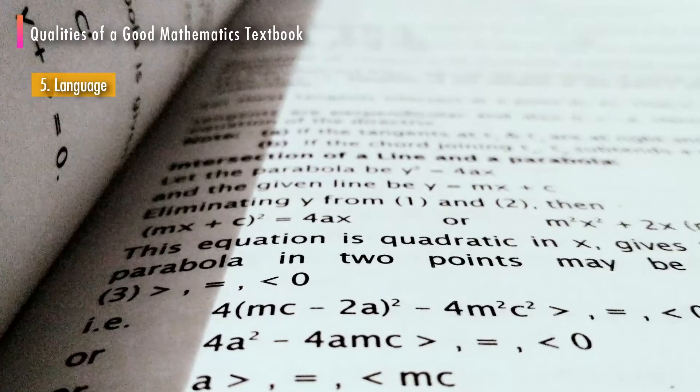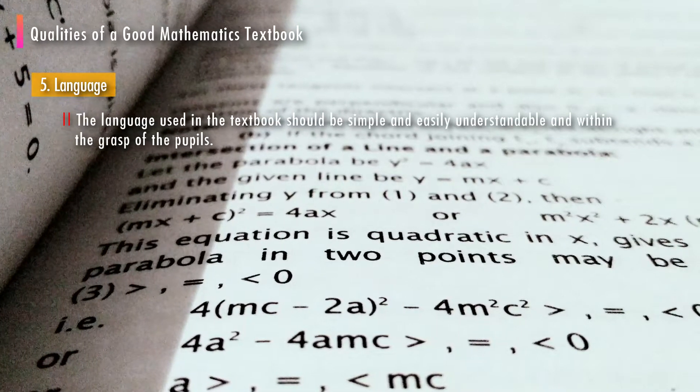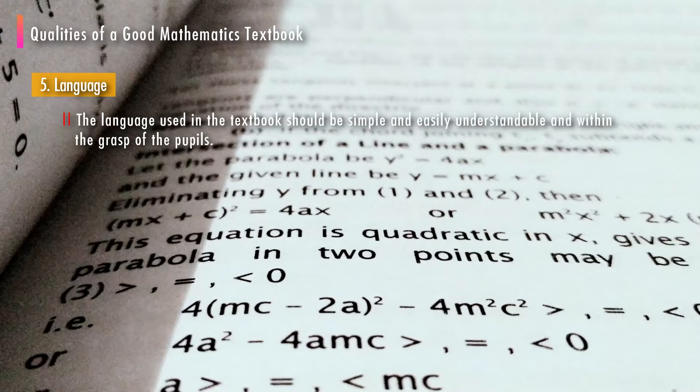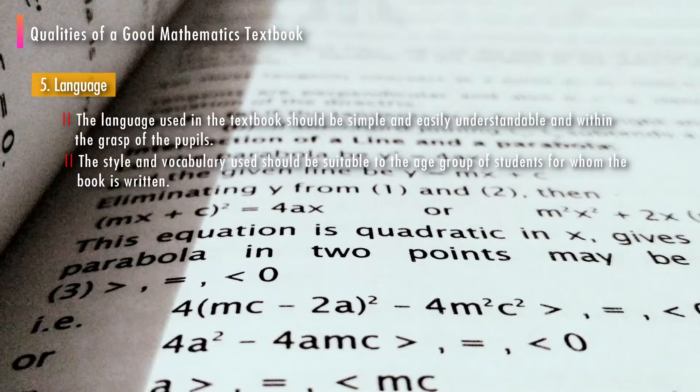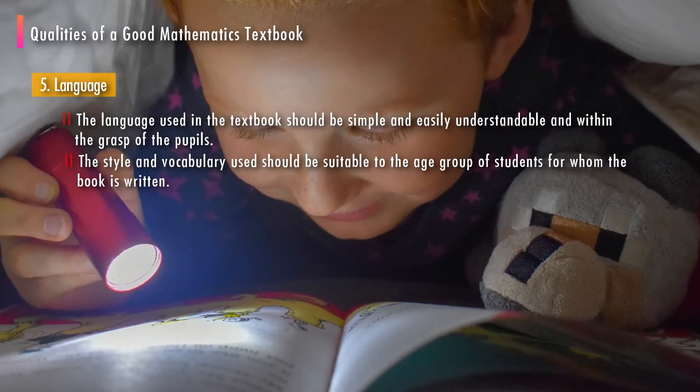The fifth is language. The language used in the textbook should be simple and easily understandable and within the grasp of the pupils. The style and vocabulary used should be suitable to the age group of students for whom the book is written.